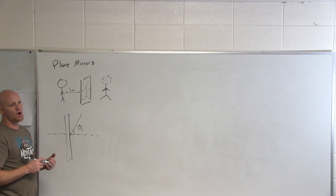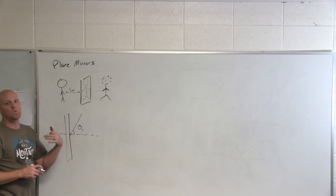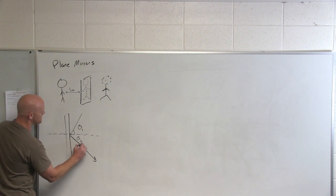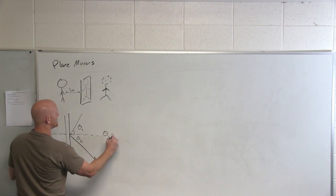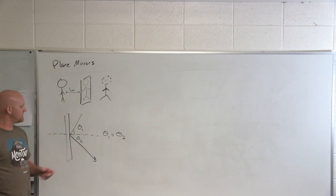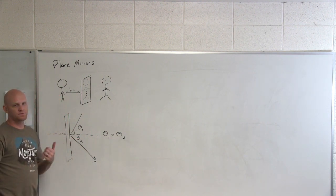And it turns out it's always going to reflect off a plane mirror with exactly the same angle. So in this case, this would be theta two and theta one would equal theta two is how we express this mathematically. The angle of incidence is equal to the angle of reflection.